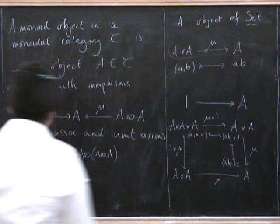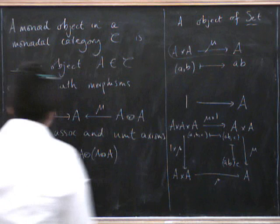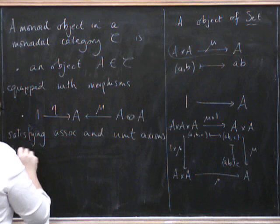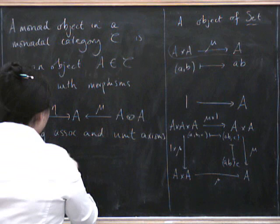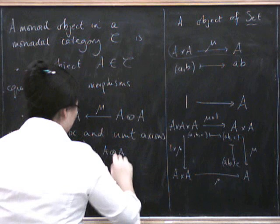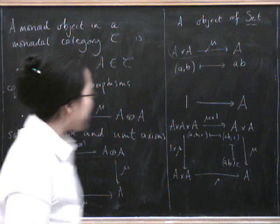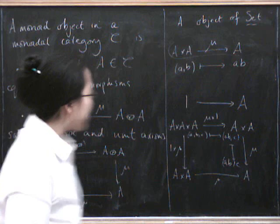I've done it the other way up from that one, which isn't very helpful of me. So perhaps I should do it the other way around. We've got A tensor A tensor A being associated that way around to A tensor A tensor A. And then when we come along the top here, we can do mu tensor 1 and then mu. And down here, we can do 1 tensor mu and then mu. And so that's what associativity says.